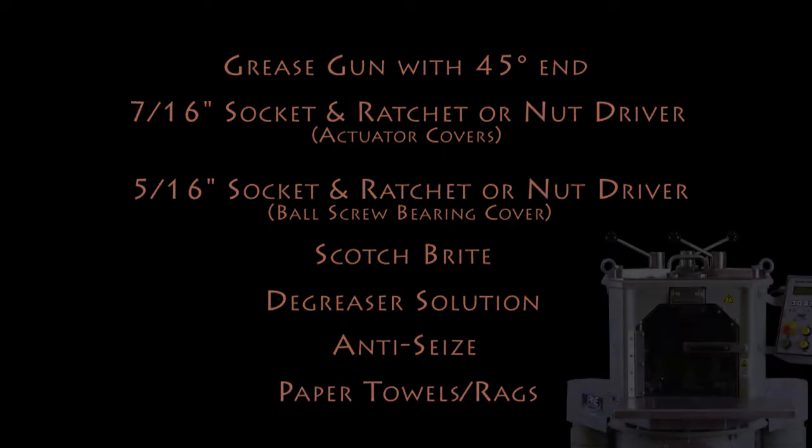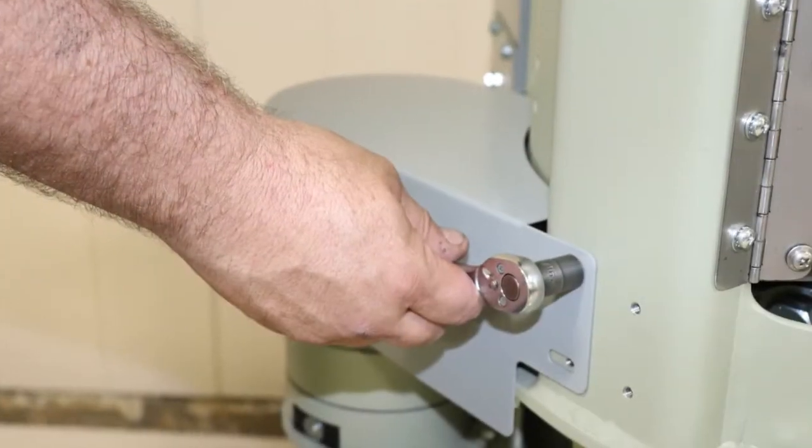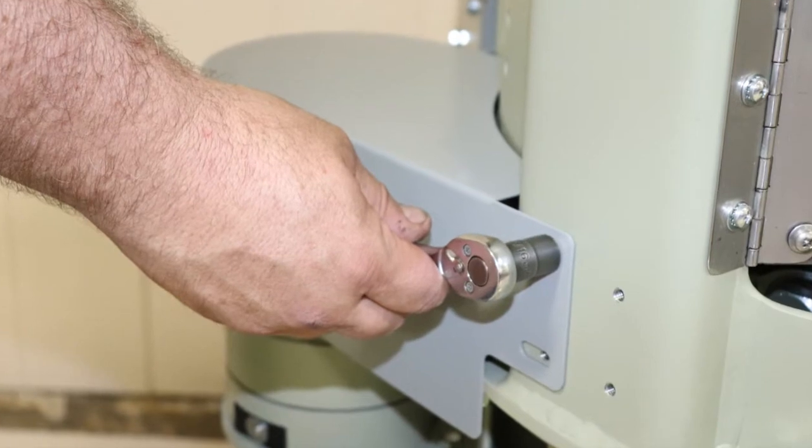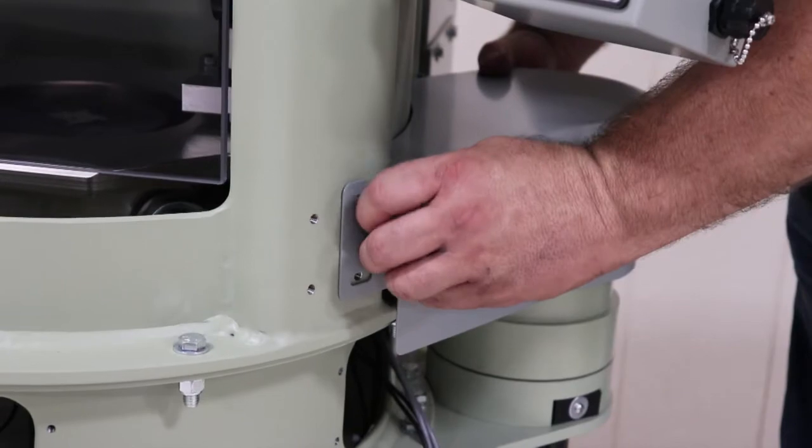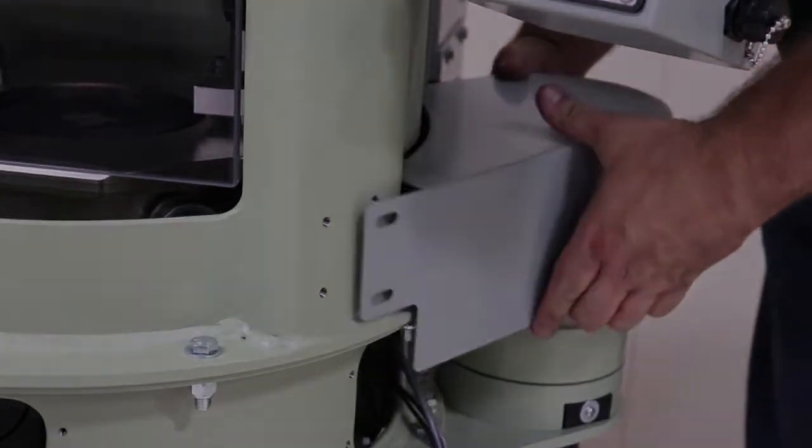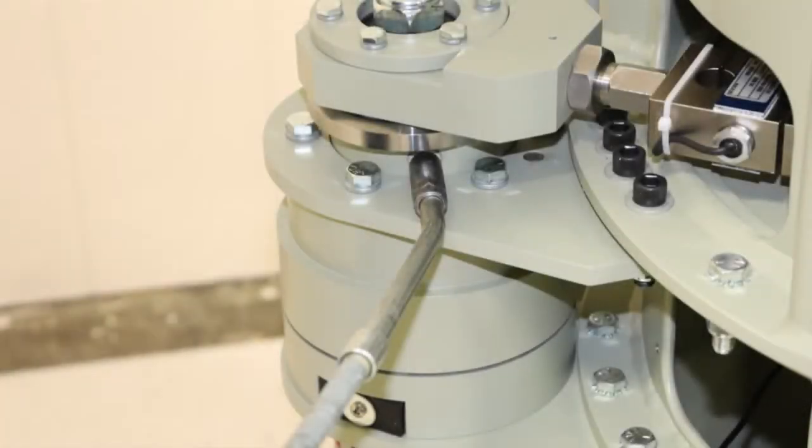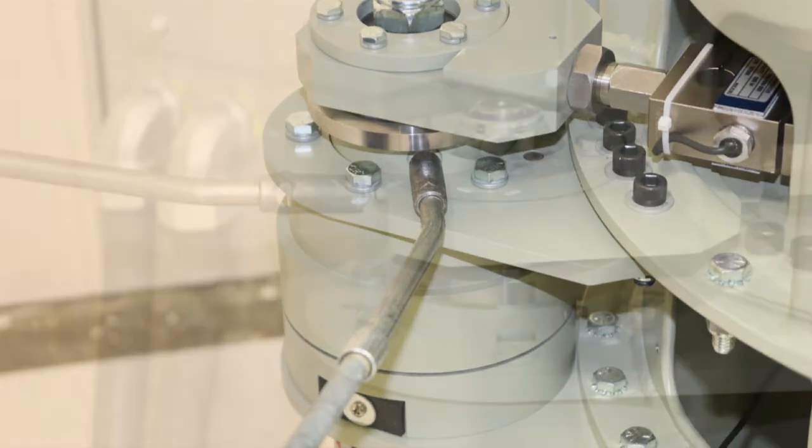Begin by using the ratchet and 7/16 inch socket or 7/16 inch nut driver to remove the left and right side actuator covers. Using the grease gun, grease the two grease fittings on each actuator.